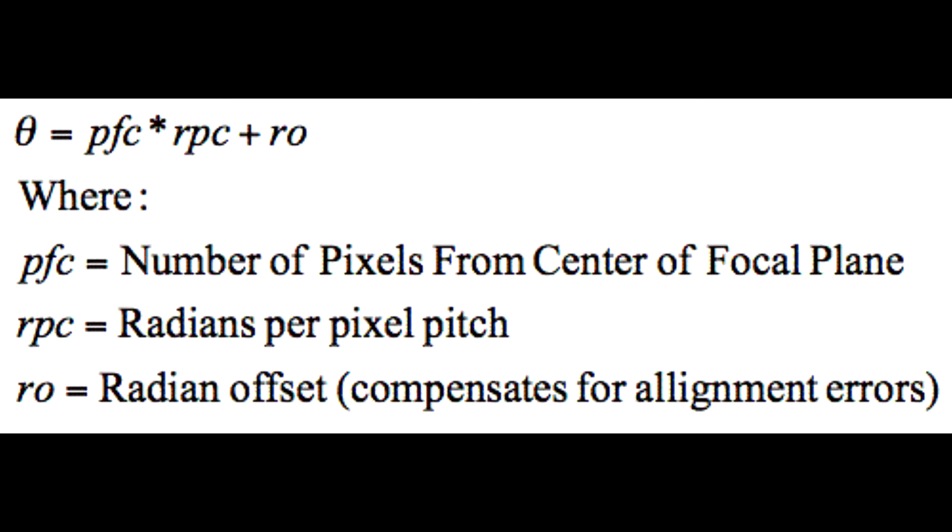And r0 is the radian offset which compensates for alignment errors, which you can also work out using some calibrating measurements. I'll explain how to do those now in a minute.